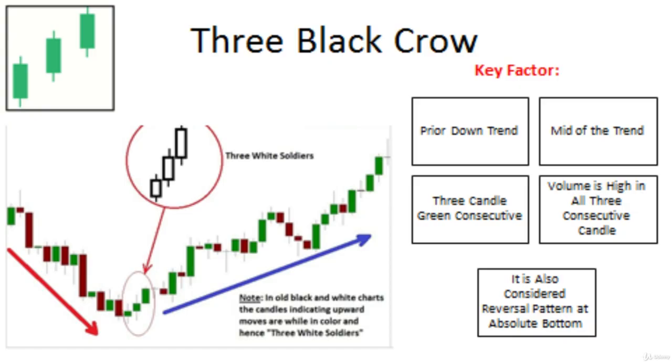Now we discuss the last continuation pattern in three candlestick patterns, known as three white soldiers. As the candlestick formation shows on your screen, you see three green candles in consecutive form, and all three candles are of identical shape and size. As the example chart shows, at the absolute bottom there are three consecutive green candles in a row, which can change the trend or reverse the pattern.